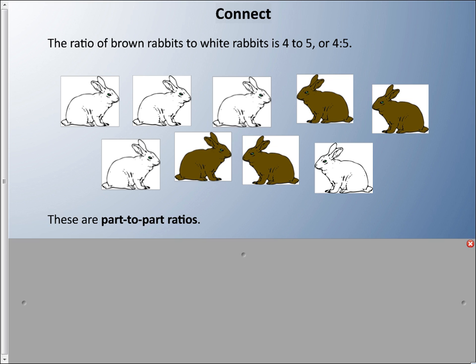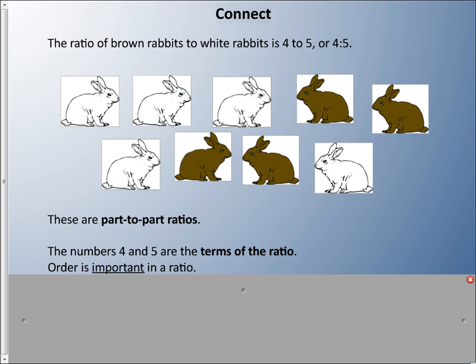The numbers 4 and 5 are the terms of the ratio, and order is important because 4:5 and 5:4 are different ratios.